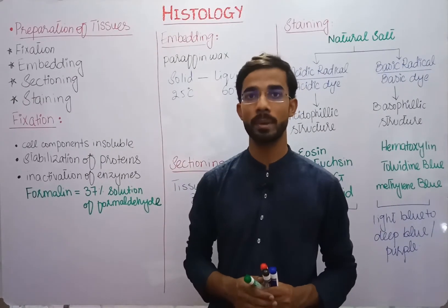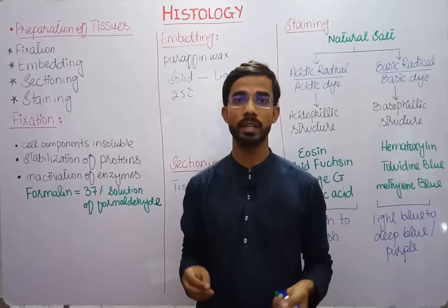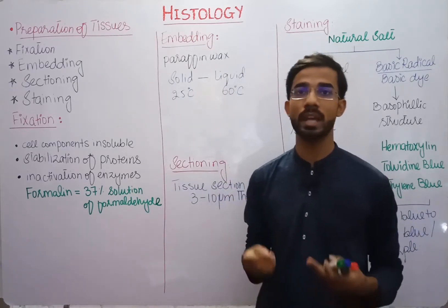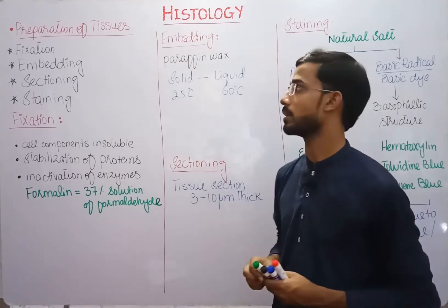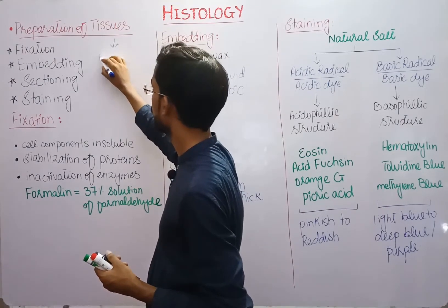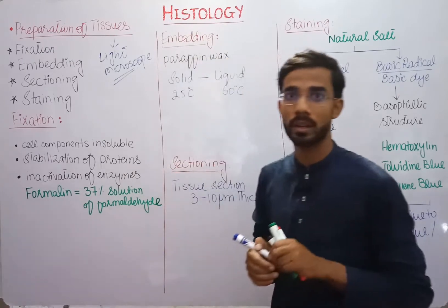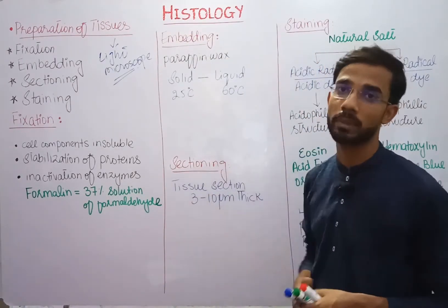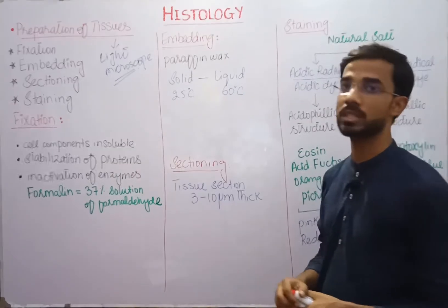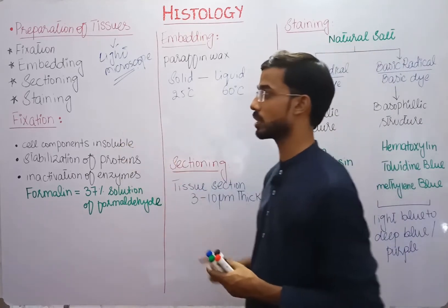Next is how to prepare tissues for examination. Because they are colorless and soft, we can't handle them directly on a microscope slide, so we have to change the hardness and color of the tissues we examine. Here are some preparations of tissues used for the light microscope. These preparations are specifically for the light microscope. The first step is fixation, second is embedding, third is sectioning, and fourth is staining.